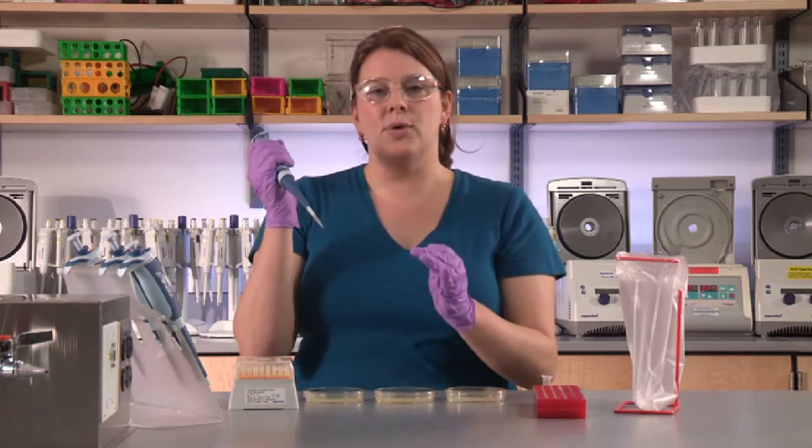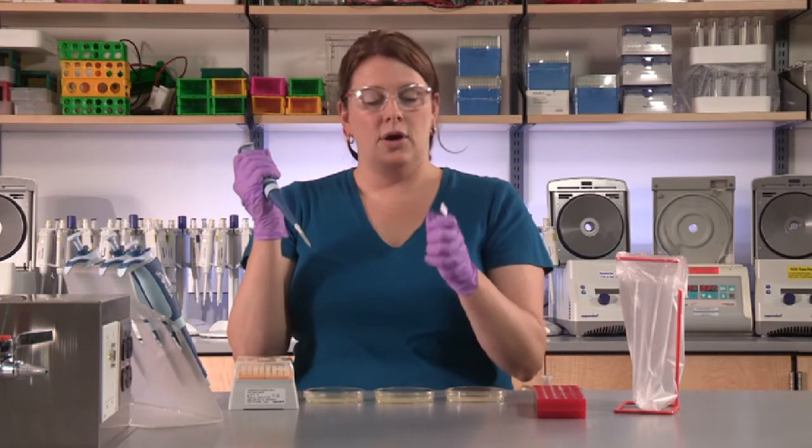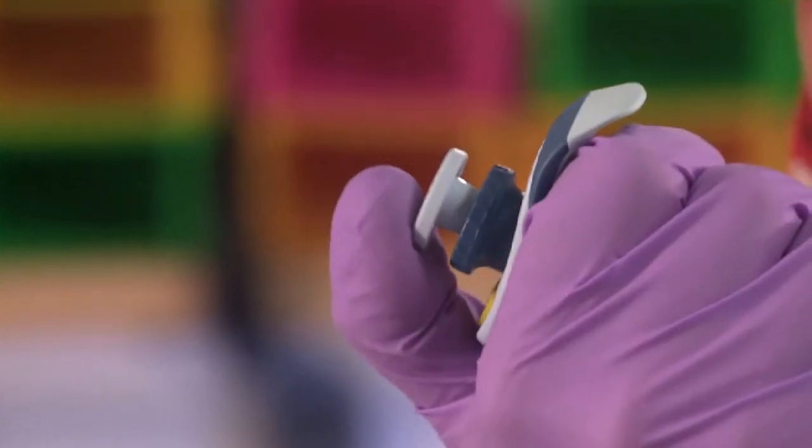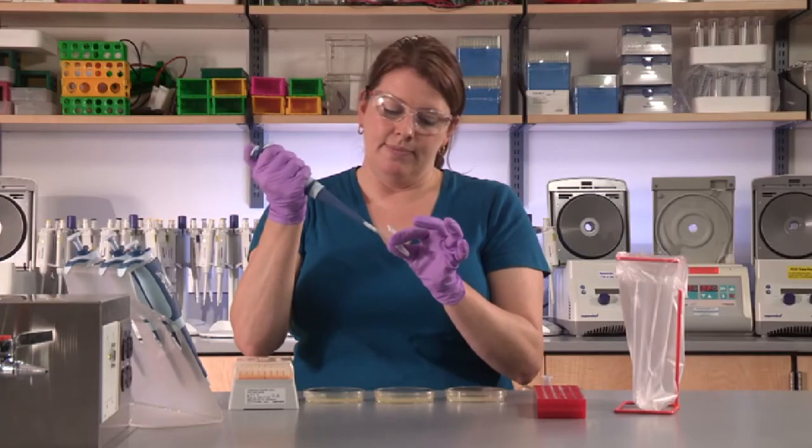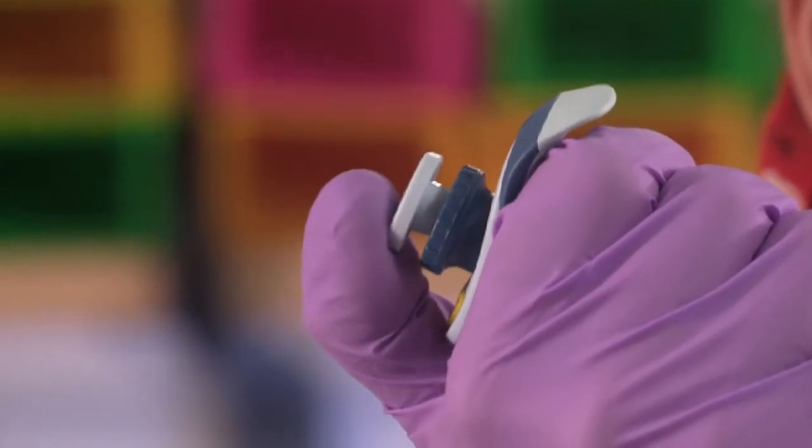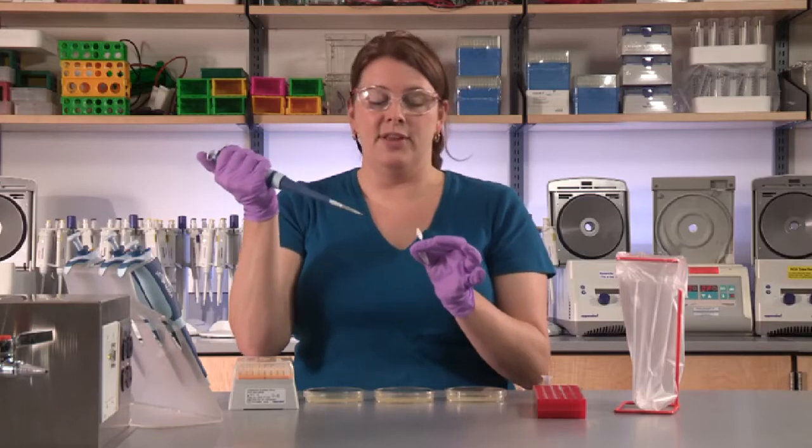At this point, you want to be certain that you're using proper aseptic technique. Open up the tube of P- cells. Press down the plunger on the pipette and gently mix the cells up and down. Draw up 50 microliters.